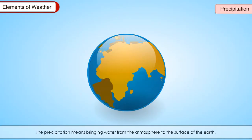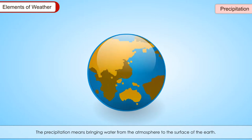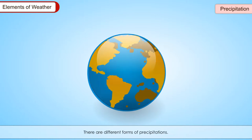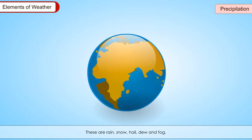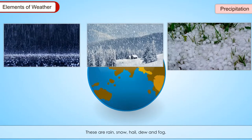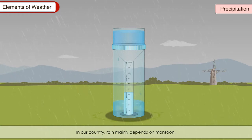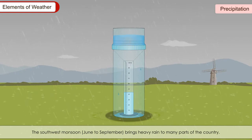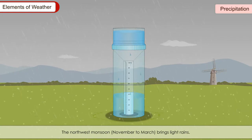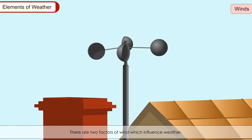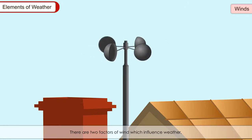Precipitation means bringing water from the atmosphere to the surface of the Earth. There are different forms of precipitation: rain, snow, hail, dew and fog. Rain is measured in inches or millimeters in a rain gauge. In our country, rain mainly depends on monsoon. The southwest monsoon, June to September, brings heavy rain to many parts of the country. The northwest monsoon, November to March, brings light rains.